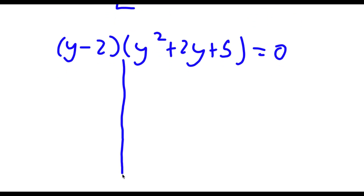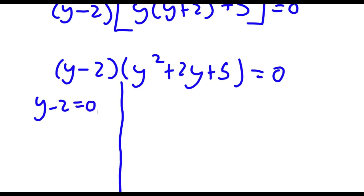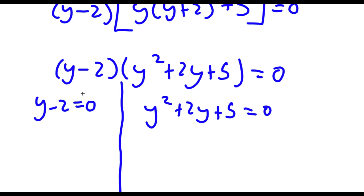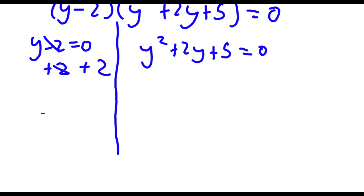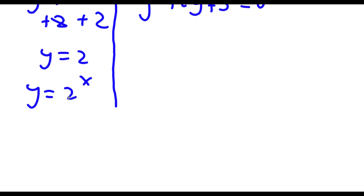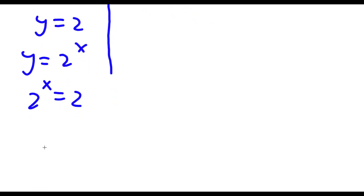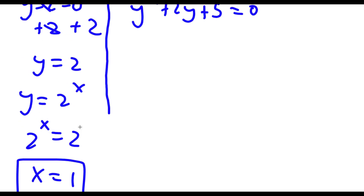This gives me two equations. For y minus 2 equals 0, I add 2 to both sides, giving y equals 2. But remember y equals 2 to the power of x, and since y equals 2, I have 2 to the power of x equals 2, so the only possible value of x is 1. This is one solution.